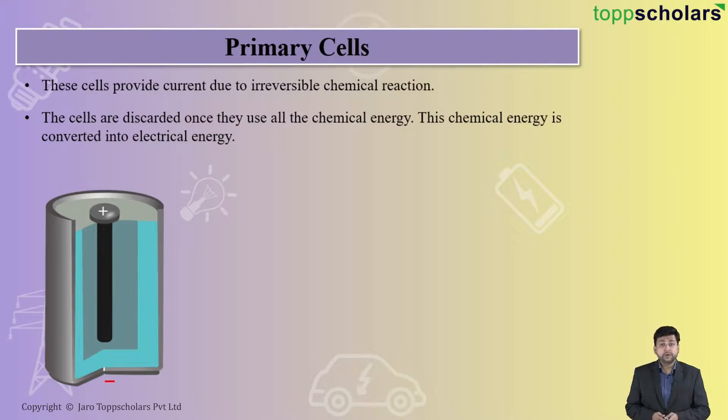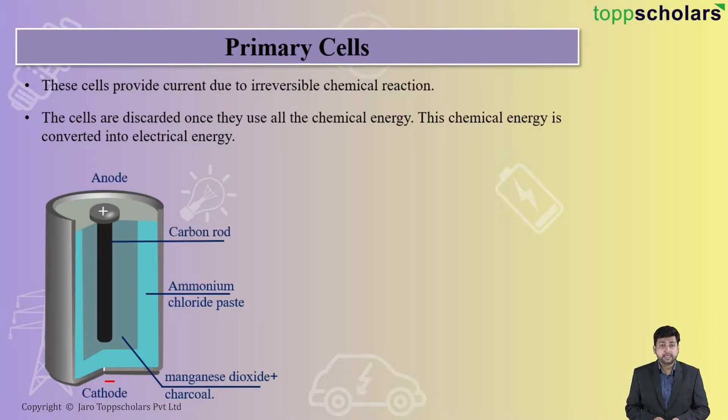Here it is an example of a dry cell. When you see here, there's nothing but the ammonium chloride paste and the second one is the manganese dioxide, that is your charcoal. And then if you talk about the anode and the cathode, exactly this anode is nothing but your carbon rod and the manganese dioxide behaves as a cathode. Now everything is kept in a container, that is mostly a zinc container.